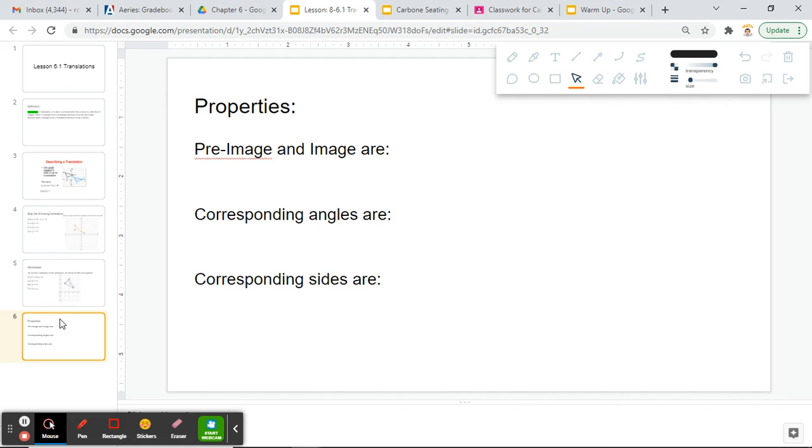Last things we want to talk about today are pre-image and our image. The pre-image is just the original figure, the image is the translated figure. Those are always going to be congruent or the same. It turns out our corresponding angles are also going to be congruent because the angle measures themselves are not going to change. If you have a 90-degree angle on a right triangle and you map it somewhere else, it will remain a 90-degree angle. And lastly, the corresponding sides are also congruent.